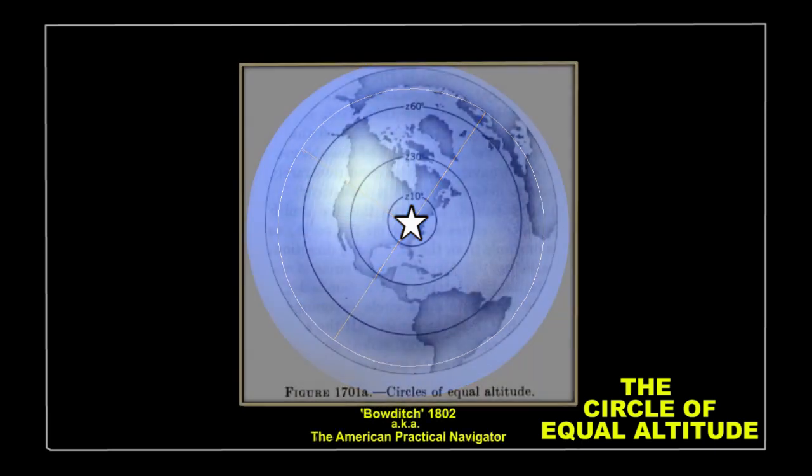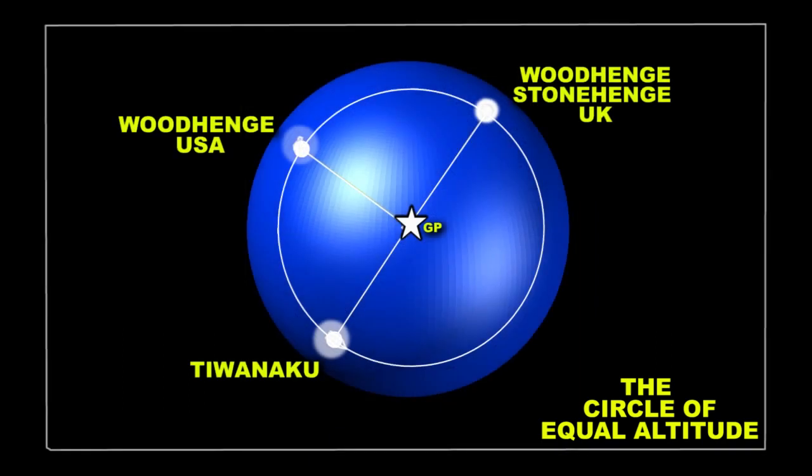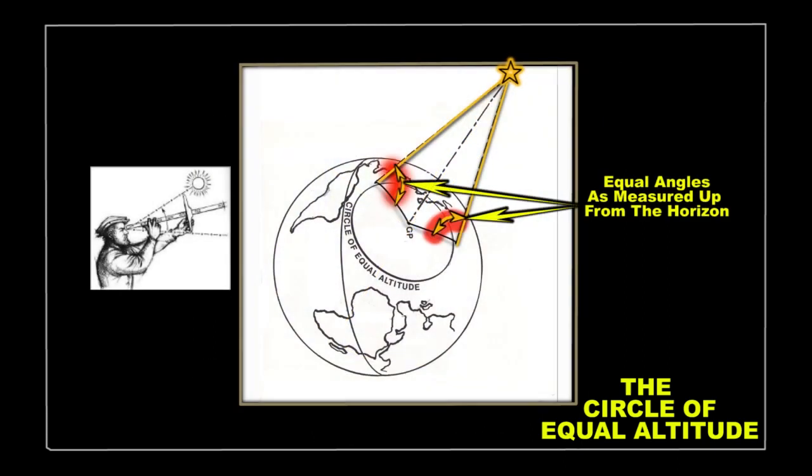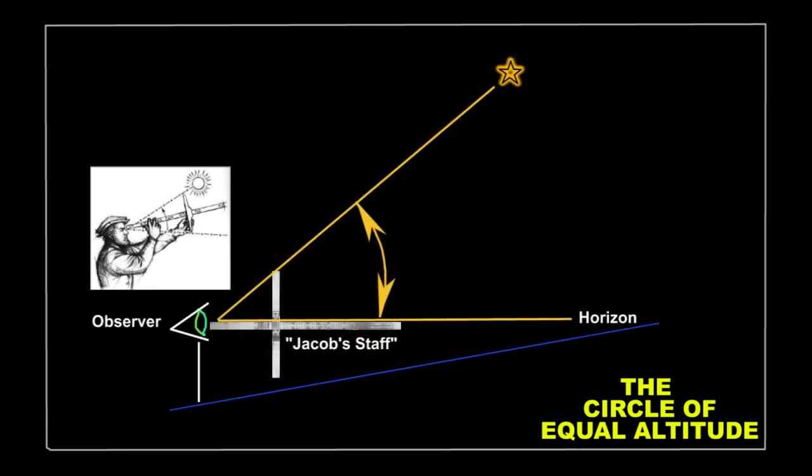The circle of equal altitude is an anciently derived method of navigation on both land and sea, since any traveler will always find any other point located on the circle to lie dead straight ahead, simply by maintaining a constant angular distance from a common center star or a common center point.